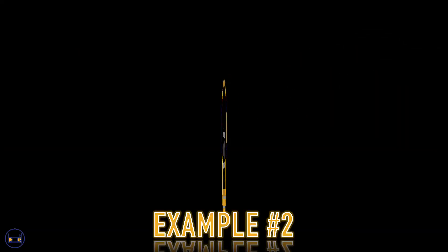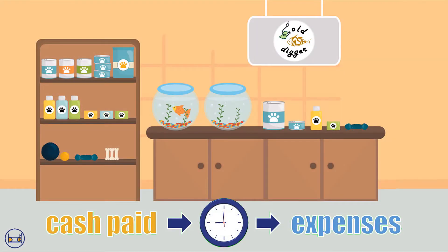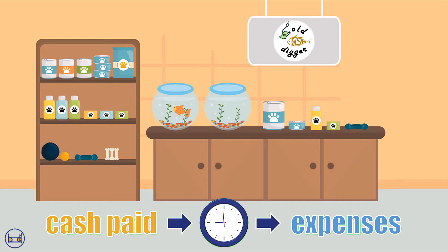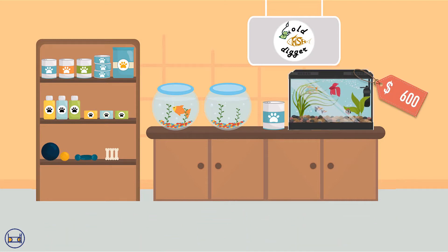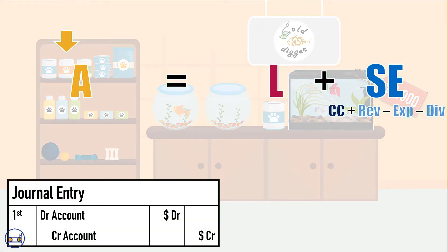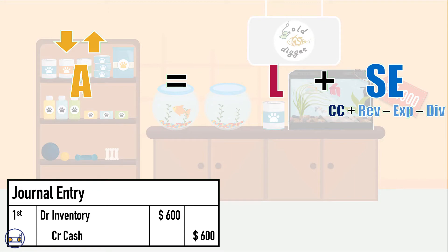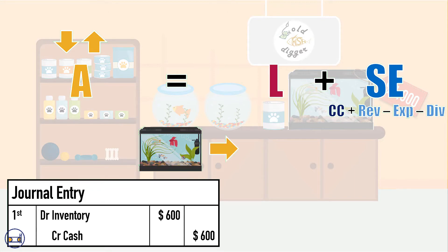Or number two, we could incur the expense after we pay cash, such as when we buy inventory. Let's say we buy aquariums for $600 cash that we plan to sell at the pet shop for $1,000. We record the decrease in cash by crediting cash for $600. But instead of debiting expenses for $600, we'll debit our assets — inventory.